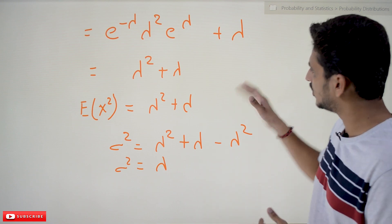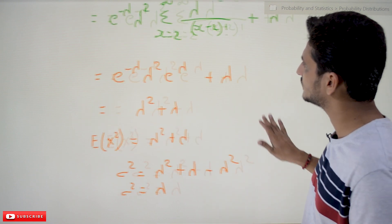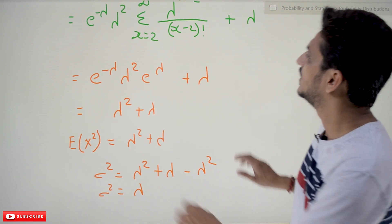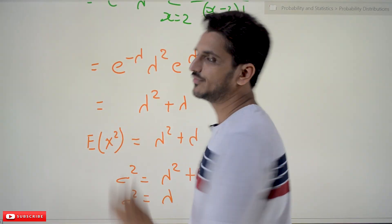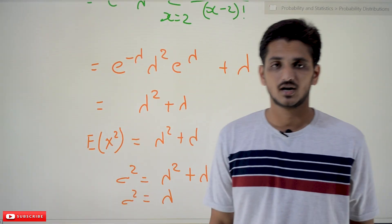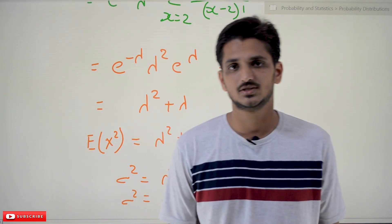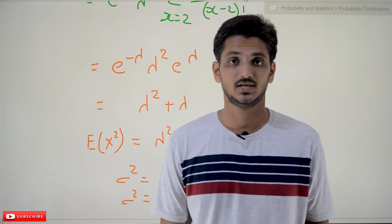Hope you understand the derivation for the mean and variance of Poisson's distribution. If you have any questions regarding the concept, please post your questions in the comment section below. Thanks for watching.